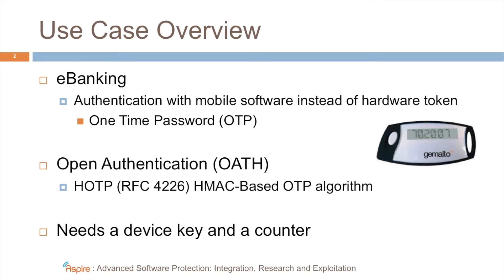The goal of this use case is to provide the same functionality, and hopefully at the same level of security, but to do so in mobile software. This use case consists of two phases, but first: an existing authentication protocol is used, and to do that, the application basically needs access to a device key. It's a seed for the random number generator used for generating the tokens, as well as a counter that's incremented whenever a one-time password is requested.